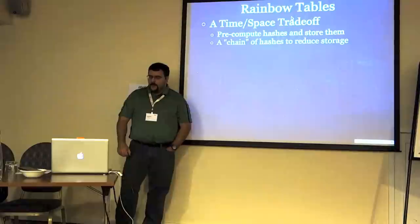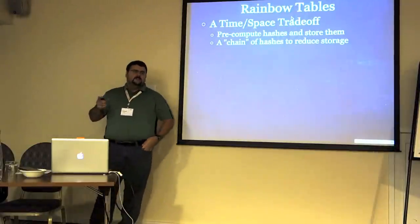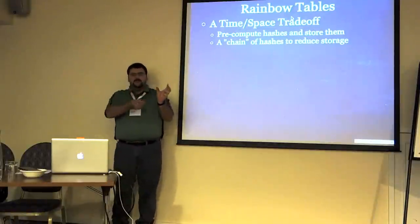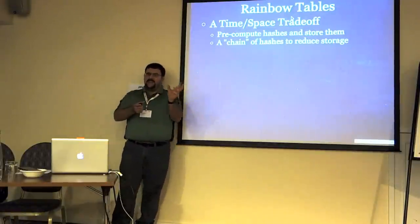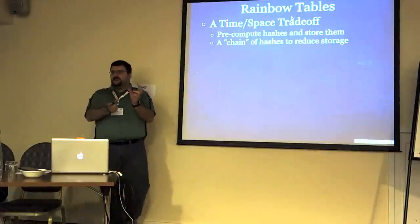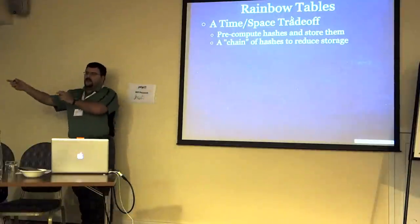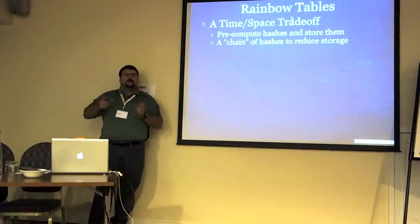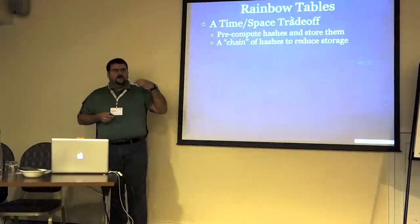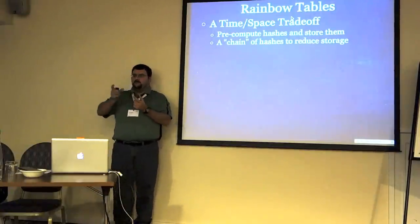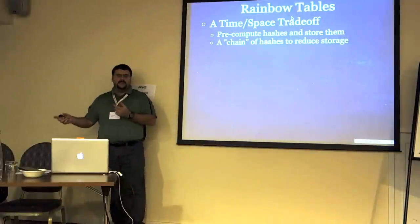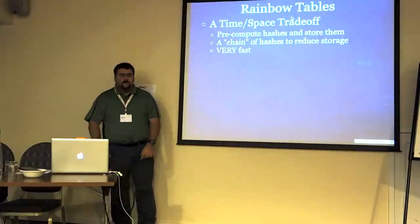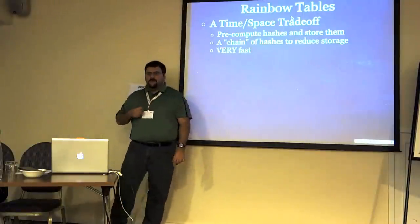A rainbow table uses a chain of hashes — it's not a lookup table. You hash and then you reduce. The reduction takes the last hash and creates another thing that looks like a password. You do that many times and store the first input and the final output. When cracking, you hash up to the maximum chain size; if you match the last one, that password is guaranteed to be somewhere in the chain. The benefit is it's very, very fast.